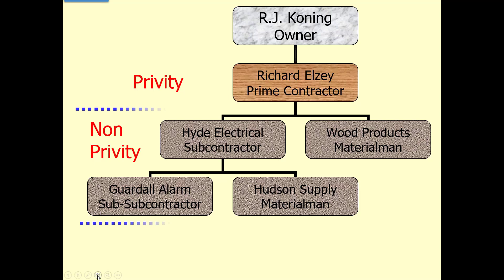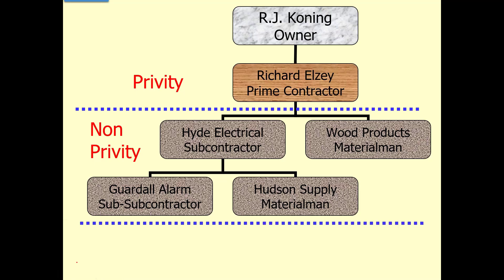The big difference is a privity contractor doesn't need to send a notice to owner, whereas any non-privity contractor, in order to have lien rights, has to serve a legal introduction to the owner. Basically, it's saying: Mr. Owner, I was hired by the contractor here on your property, and if the contractor doesn't pay me the agreed upon amount, I'm going to go directly to you looking for payment. So you're legally introducing yourself to the owner.